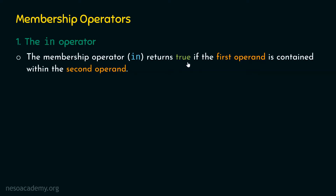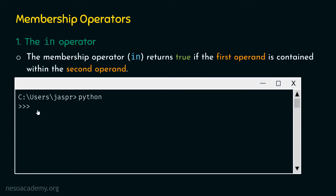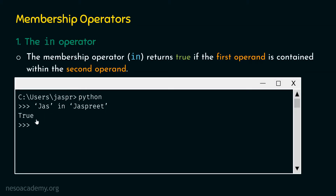If the first operand is not contained within the second operand, it returns false. For example, let's go to our command prompt and activate the Python interactive shell. We are now ready to type commands. The first operand is contained within the second operand, which is why the `in` operator is returning true.